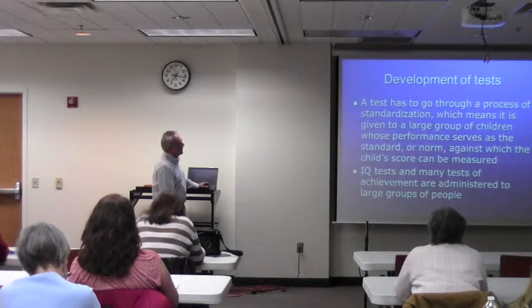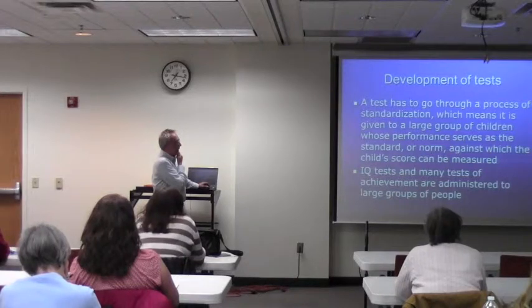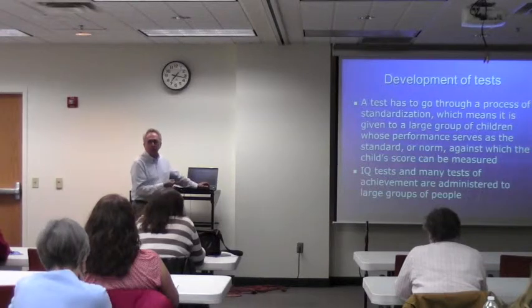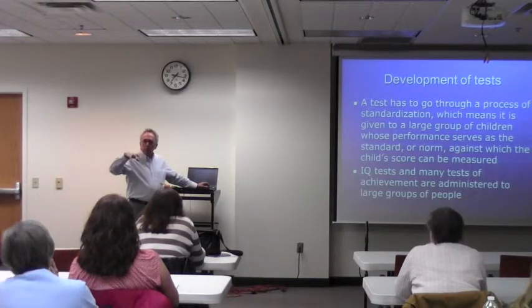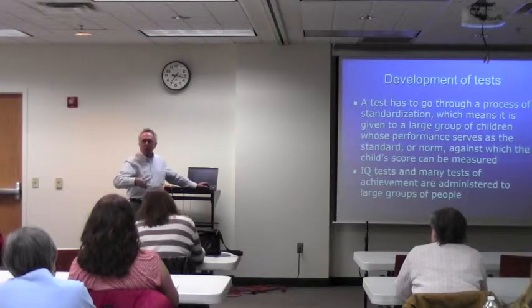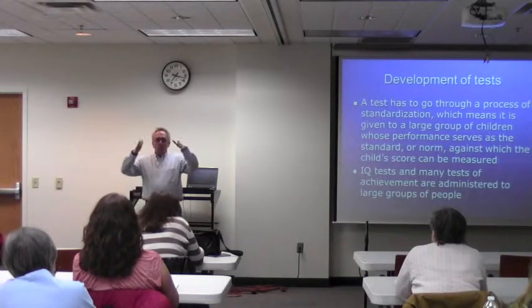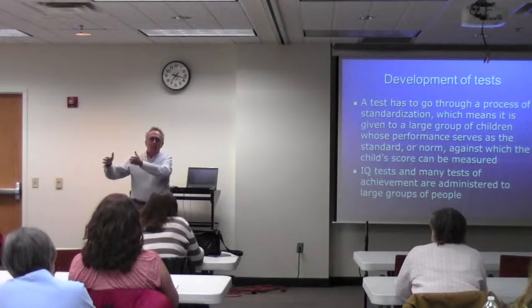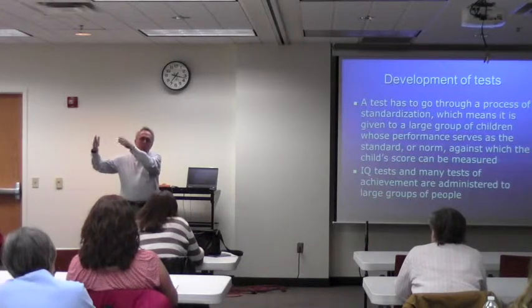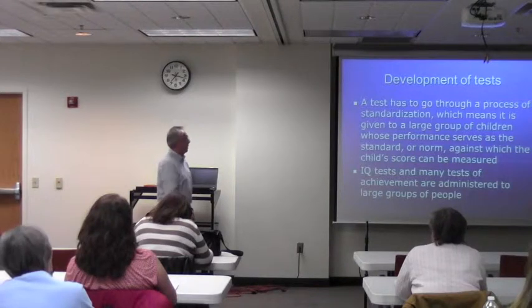You give the test to a large group of children — IQ tests and many achievement tests are created this way. They randomly choose parts of the population throughout the nation and administer test items until they establish a standard where everyone in the eight-year-old range answers certain questions correctly, nine-year-olds answer different ones correctly. That's how you arrive at scores for what's average and what isn't average.